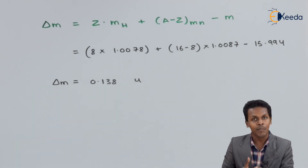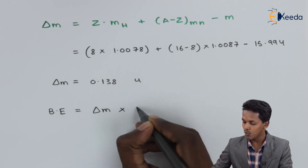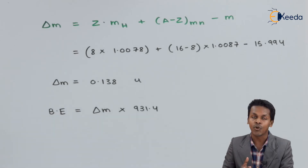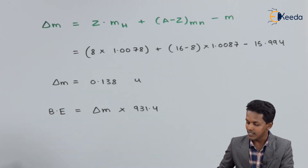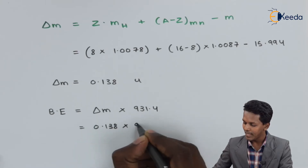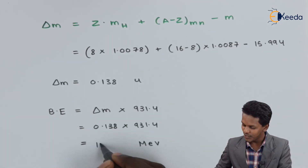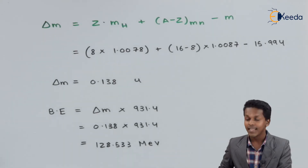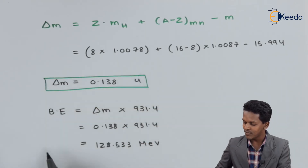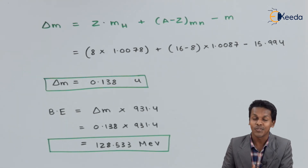Based on the mass defect, we can calculate the binding energy. The formula is: BE equals delta m multiplied by 931.4, since binding energy has units of MeV (million electron volts). Substituting delta m as 0.138, we get 0.138 multiplied by 931.4, which gives us a binding energy of 128.533 MeV.